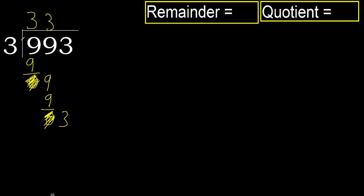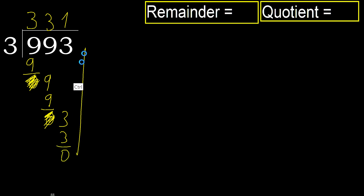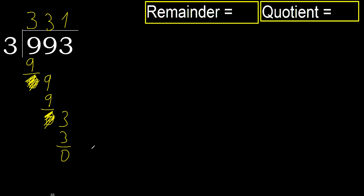Bring down 3. 3 multiplied by 2 is 6, is greater. Multiply by 1 — 3 is not greater. Subtract. Next, there is no number, therefore finish it.